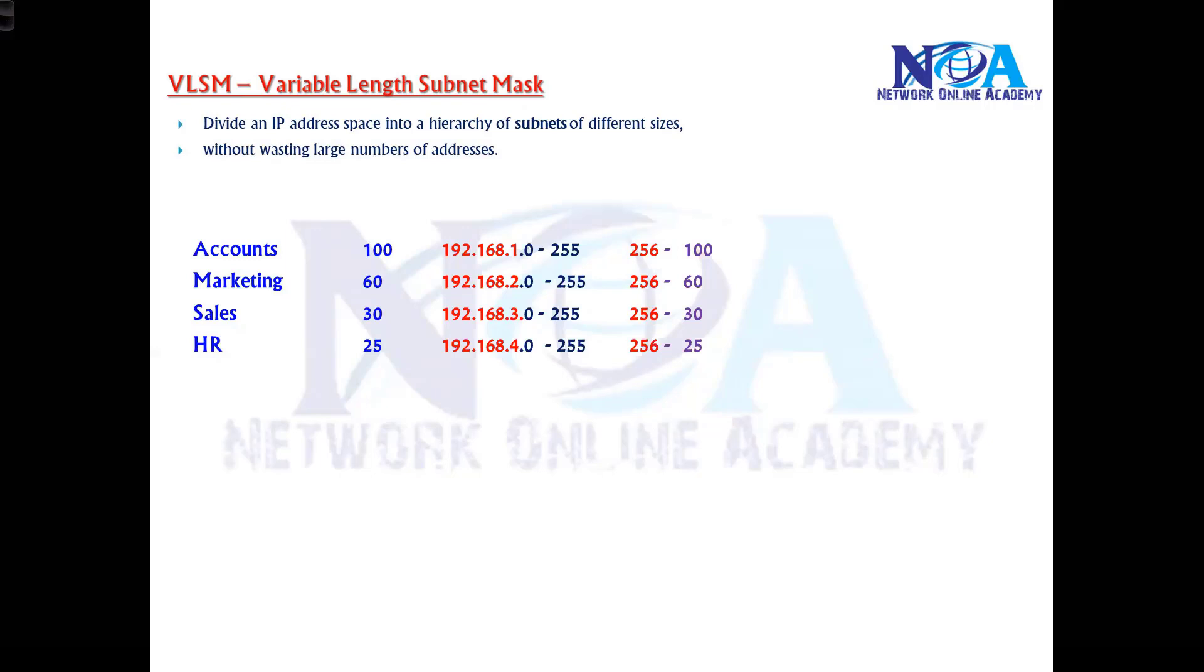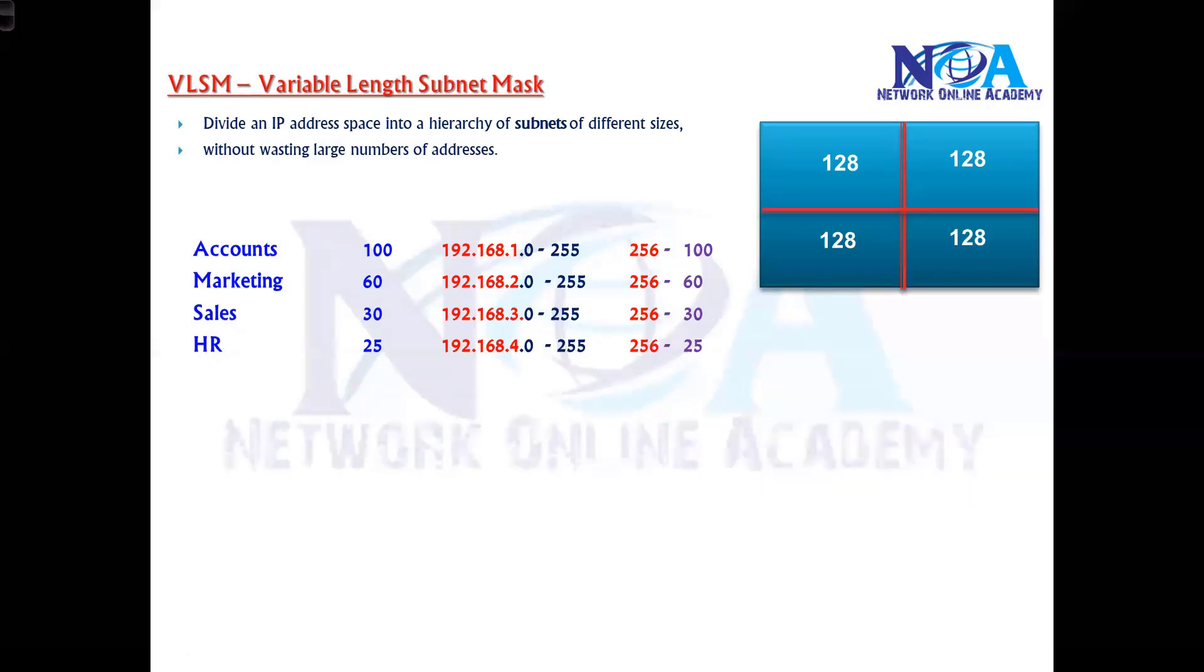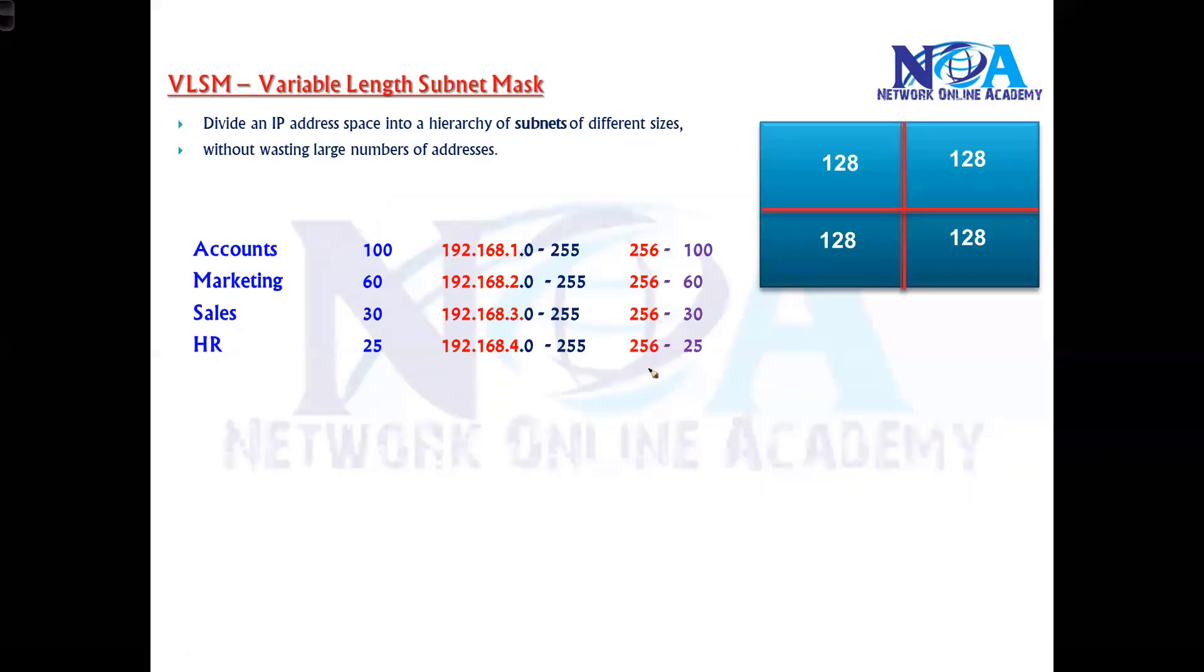In FLSM, we divide networks into equal sizes. As per this requirement, I can divide equally. According to the 2 power table - 2 to the power of 7 is 128. I can't go with 64 because that won't satisfy the 100-host requirement, so I'll go with the higher number, 128.